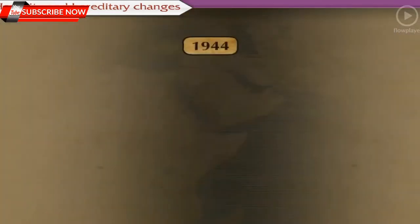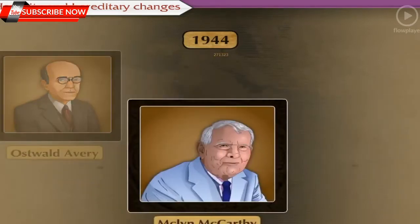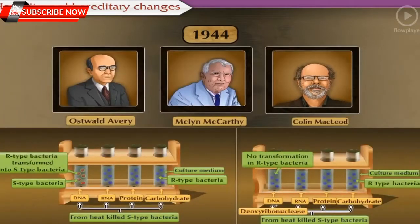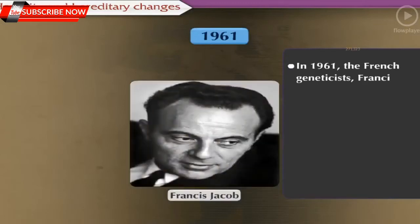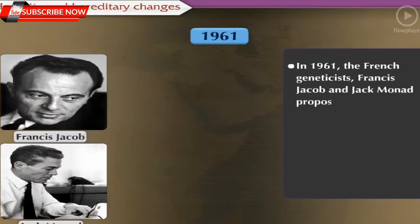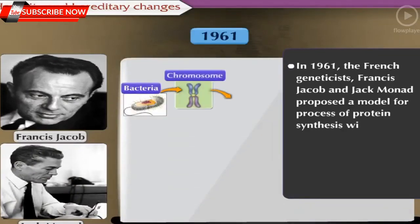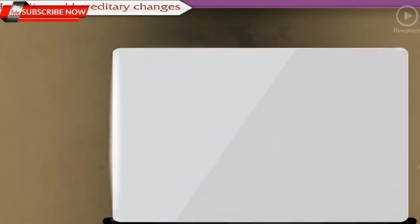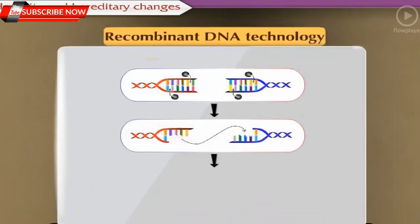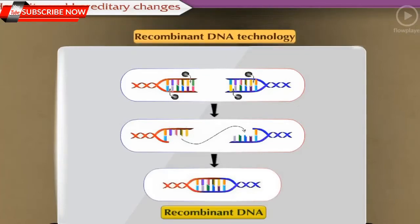In the year 1944, the trio of scientists Oswald Avery, Macklin McCarty and Colin McLeod proved that except viruses, all living organisms have DNA as genetic material. In 1961, French geneticists Francis Jacob and Jacques Monod proposed a model for the process of protein synthesis with the help of bacterial cells. It helped to uncover the genetic models hidden in DNA, and thereby the technique of recombinant DNA technology emerged, which has vast scope in the field of genetic engineering.